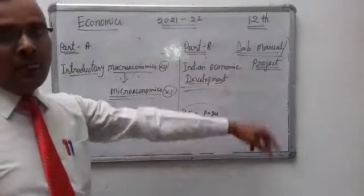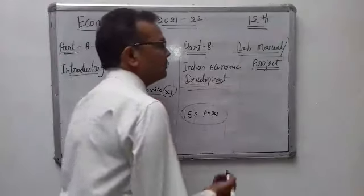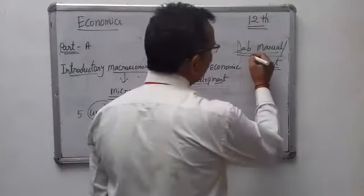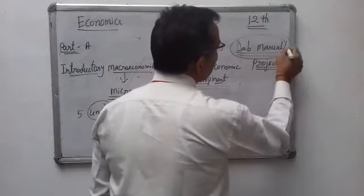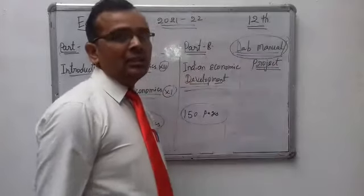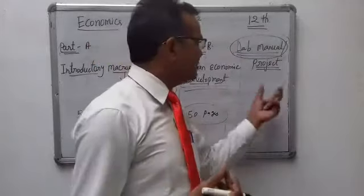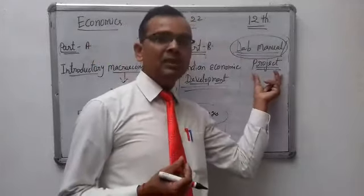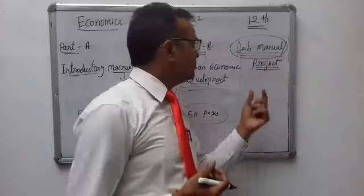The third item you need is a lab manual. You have to purchase a lab manual book. It contains project works and details of activities done based on economics.